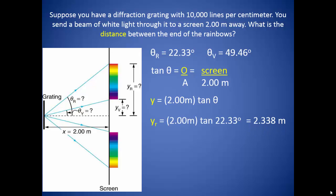When we use our angle of diffraction for red light, we find that the red is positioned 2.338 meters from the center of the screen. Doing the same thing for the violet light, we find it falls 0.815 meters from the center of the screen.